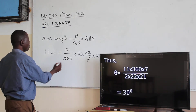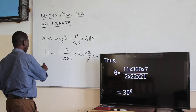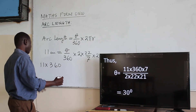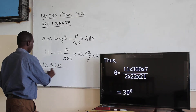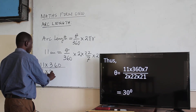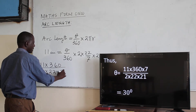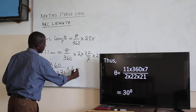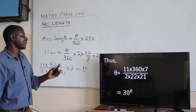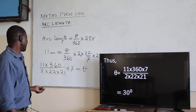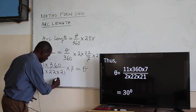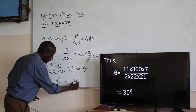We cross-multiply by 360. So it is 11 multiplied by 360, divided by 2, divided by 22, divided by 21, then multiplied by 7. That gives us angle theta equal to 30 degrees.